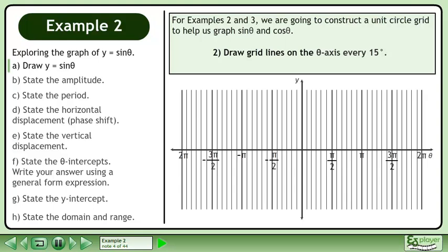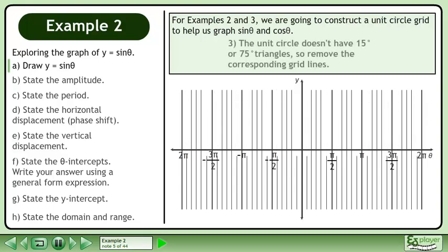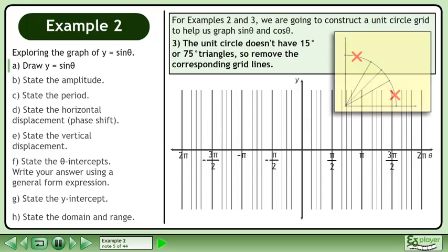Draw grid lines on the theta axis every 15 degrees. The unit circle doesn't have 15-degree or 75-degree triangles, so remove the corresponding gridlines.